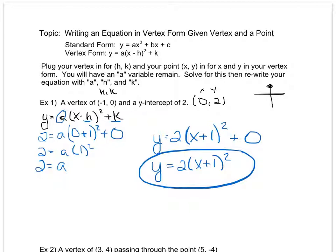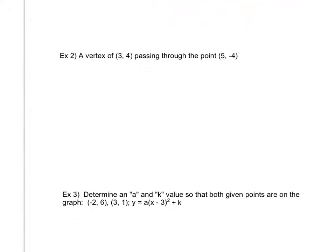Let's look at another example like this, one that I don't necessarily have as many zeros involved. So I'll up the difficulty level just a little bit, but overall same directions. I'm given a vertex, I'm given an h, k, and I'm given a point. I'm given an x, y.